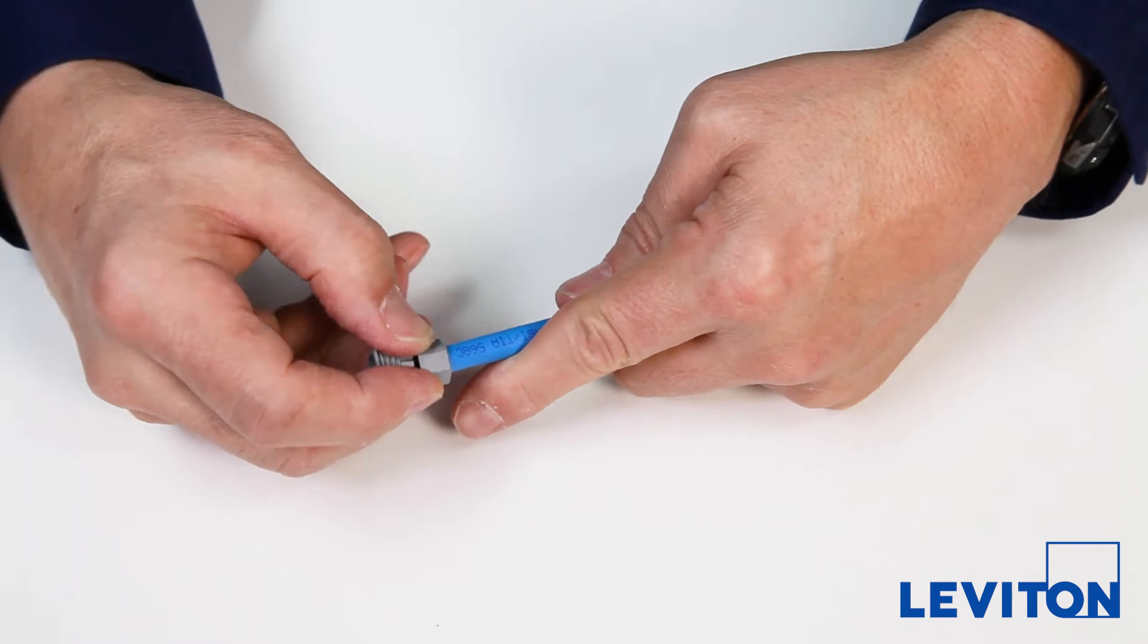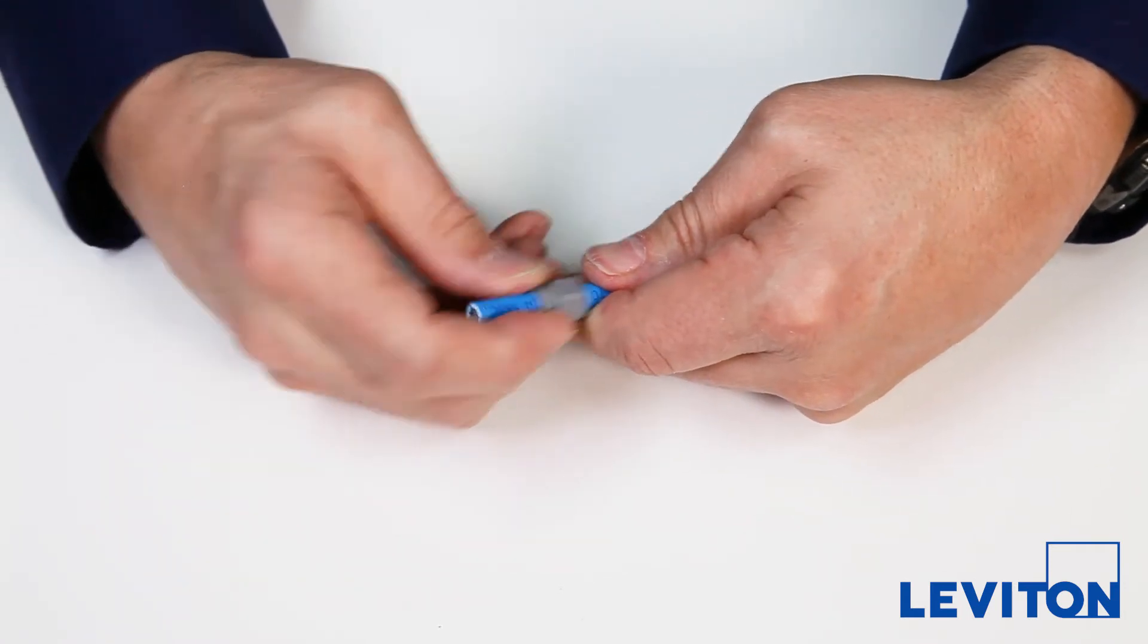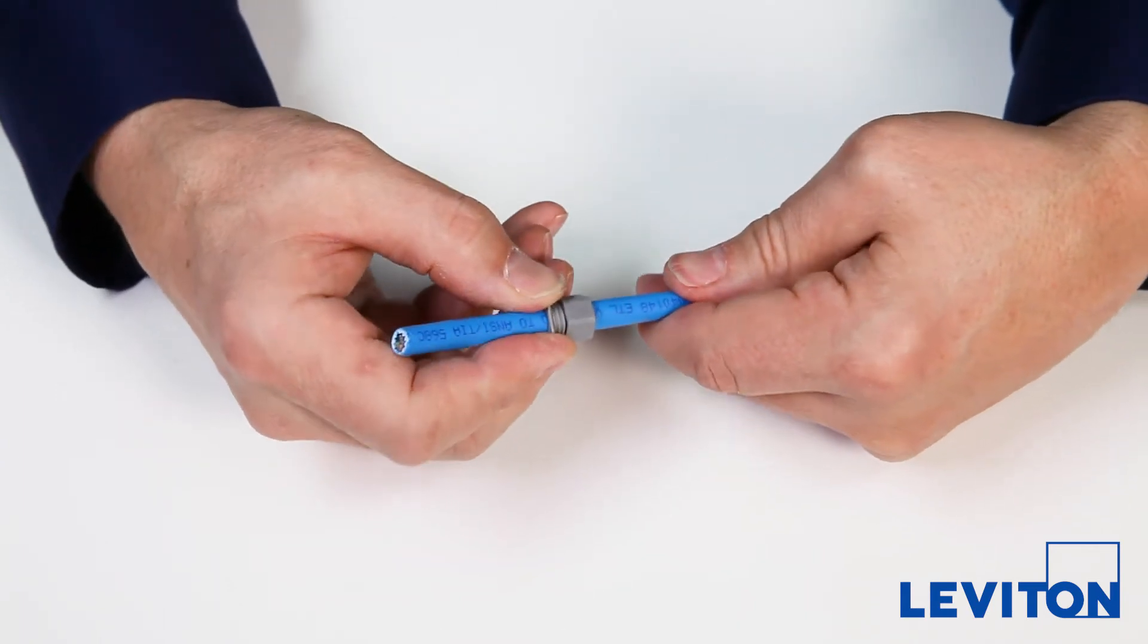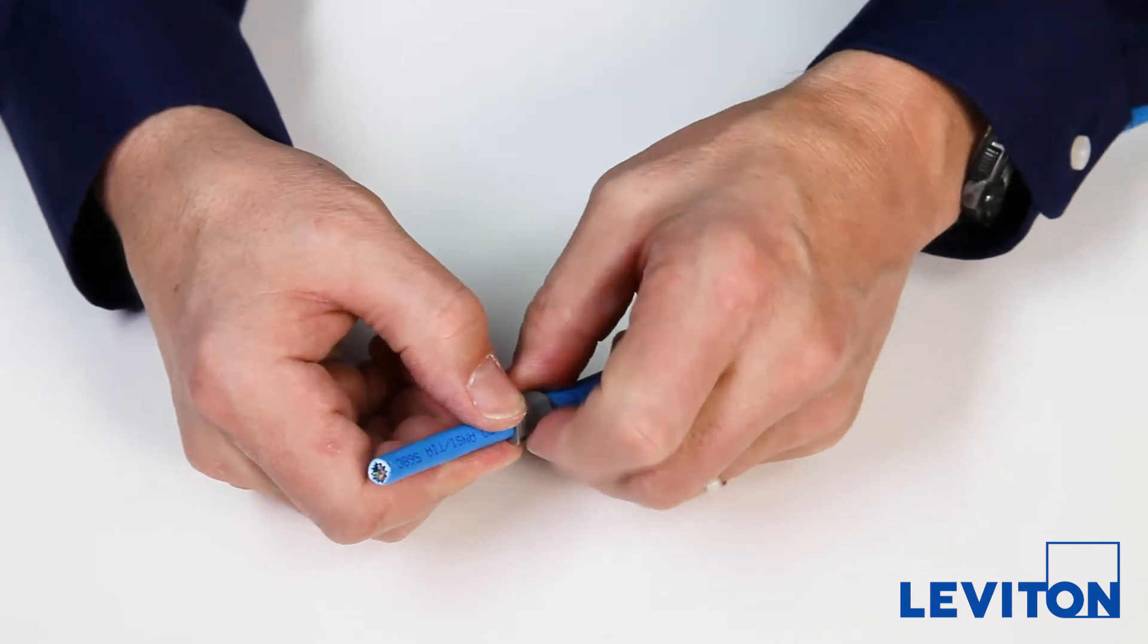Unscrew the square component from the nut. Slide the nut onto the cable, then the square component, making sure none of the teeth slip under the cable jacket. Screw the two pieces together loosely.